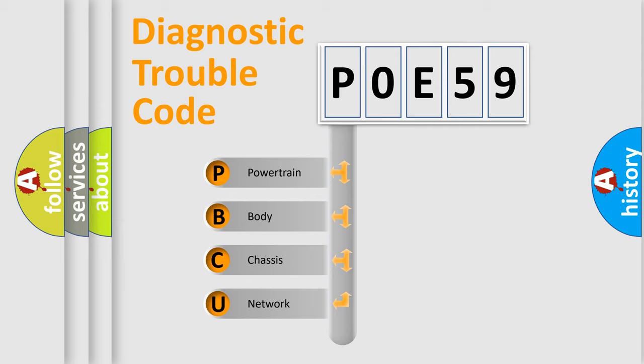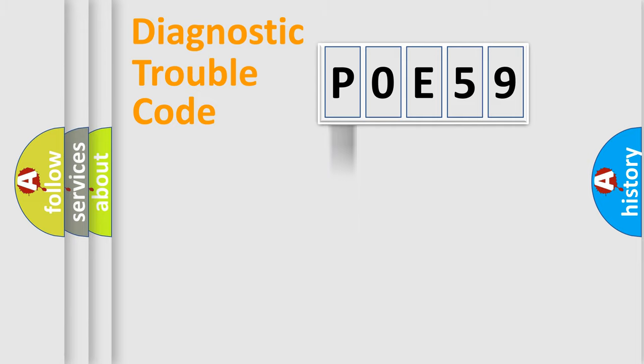We divide the electric system of automobile into four basic units: Powertrain, Body, Chassis, Network. This distribution is defined in the first character code.